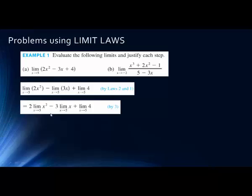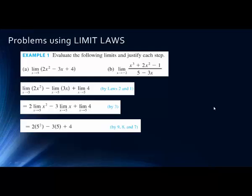The limit as x goes to 5 of 2x² — we can pull that constant out in front — same in the second term. Now we have three different rules: x to a power of n (in this case n is 2), the limit of x, and the limit of a constant. Remember that x to the n as x goes to a, we just plug in the a value. The limit of just x equals that a value, and the limit of a constant is always that constant. So we just do the arithmetic and get 39.